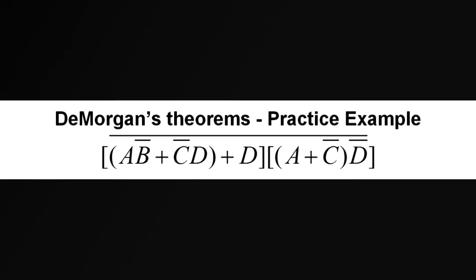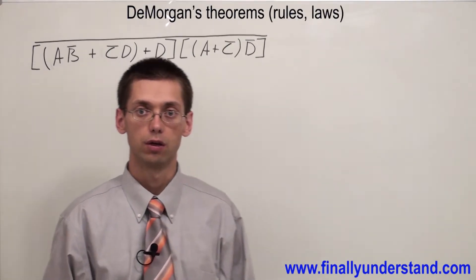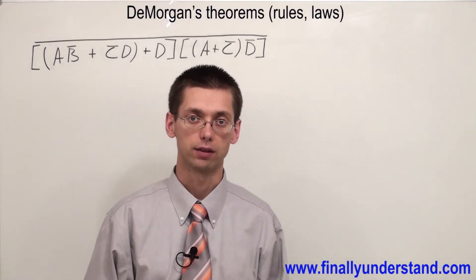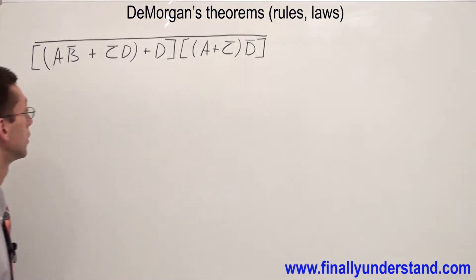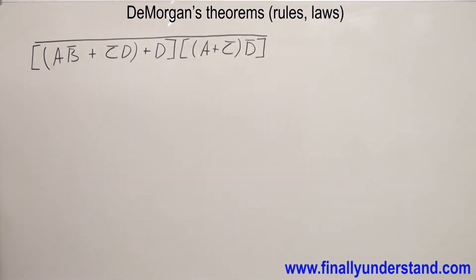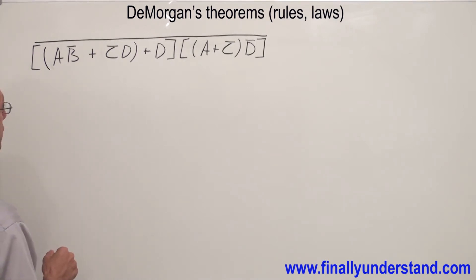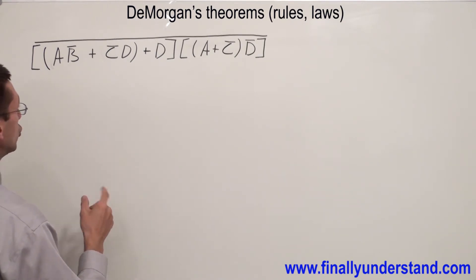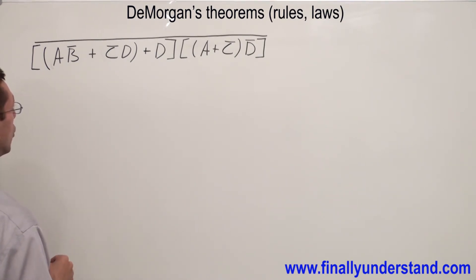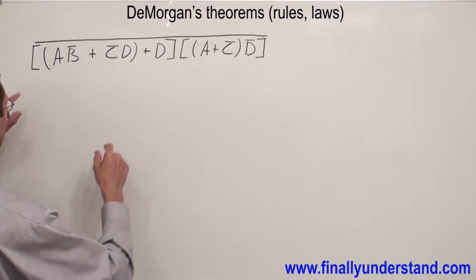Using De Morgan's theorems, simplify the following example. The question is: where are we supposed to start solving this problem? We have to always look at the whole expression and try to find the biggest terms which are joined together in this whole function.